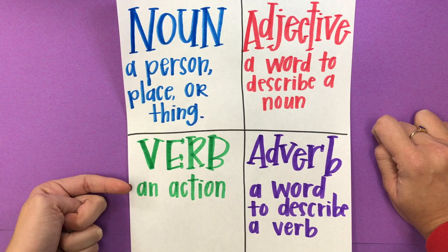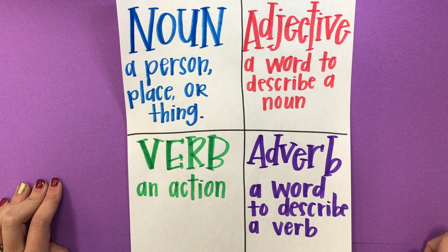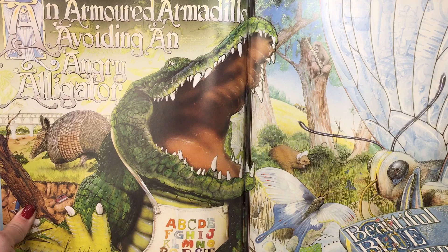A verb is an action, like run, or jump, or hop — an action. An adverb is a word to describe a verb, like quickly. Usually it ends in -ly.